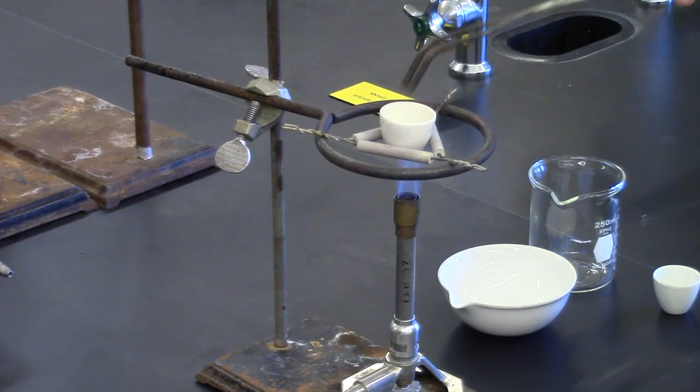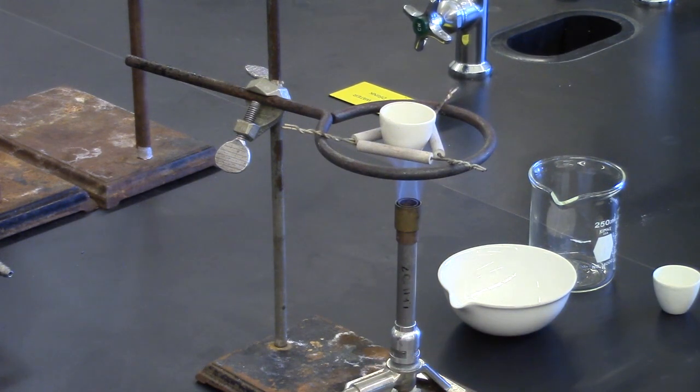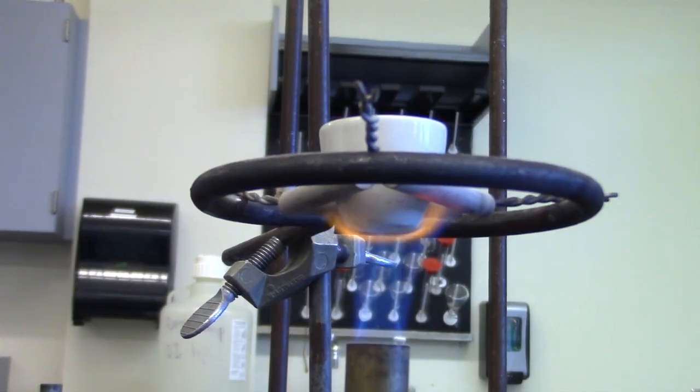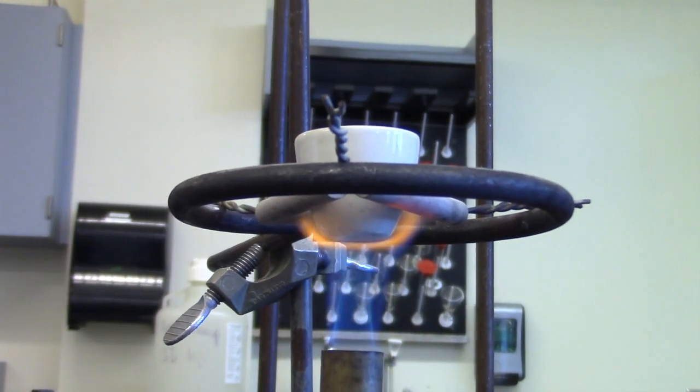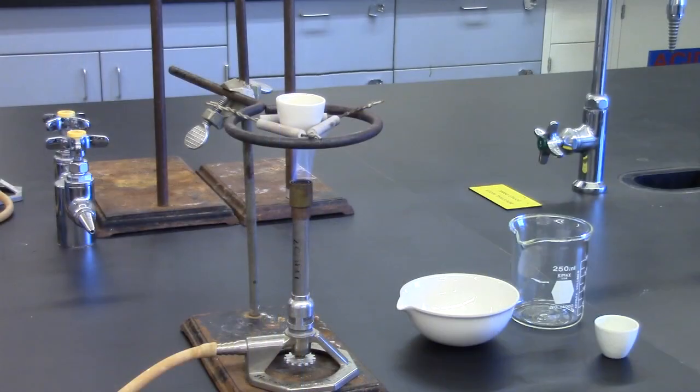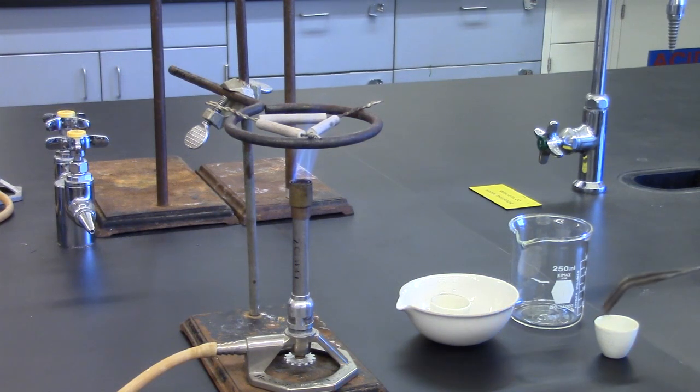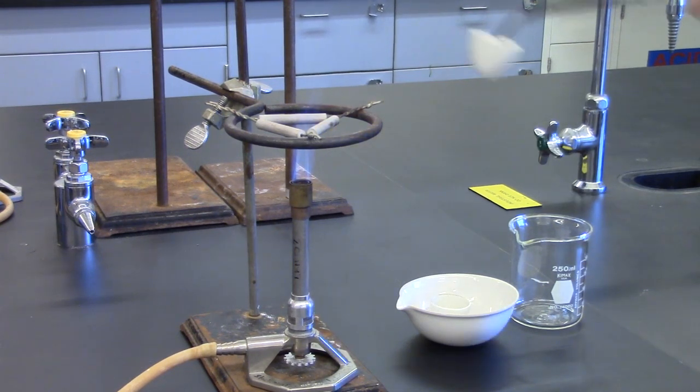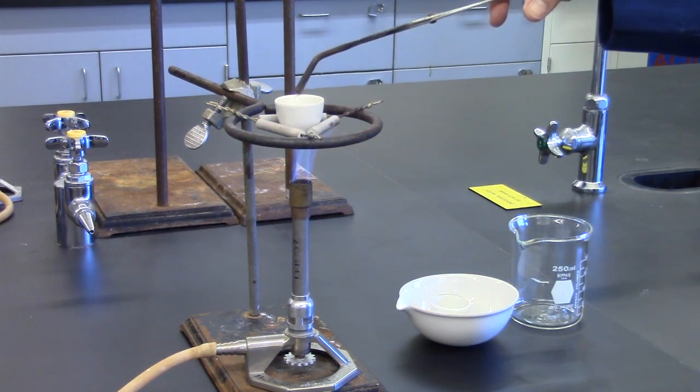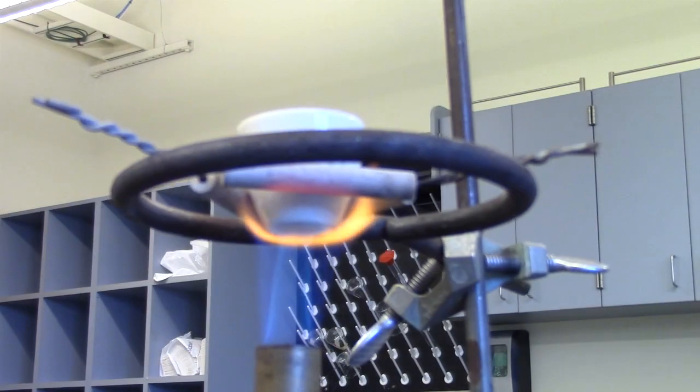Heat the crucibles one at a time at dull red for at least one minute, and cool in your evaporating dish or on your wire gauze. It will cool faster on the wire gauze.